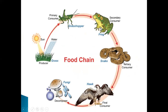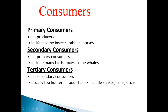The tertiary consumers eat the secondary consumer. So the primary consumers eat producers like insects, rabbits, and horses. The secondary consumers eat primary consumers like birds, foxes, and whales. The tertiary consumers are consumers that eat secondary consumers, like snakes and lions.